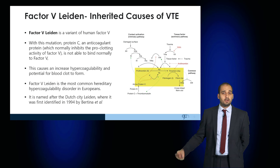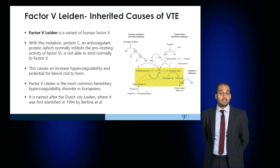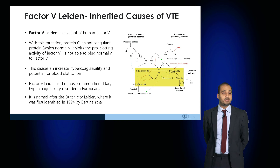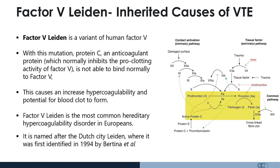Factor V Leiden is a common hereditary hypercoagulable disorder, particularly in Europeans, where there is a variant of human factor V. When this mutation is present, protein C, a natural anticoagulant, is unable to bind normally to factor V.